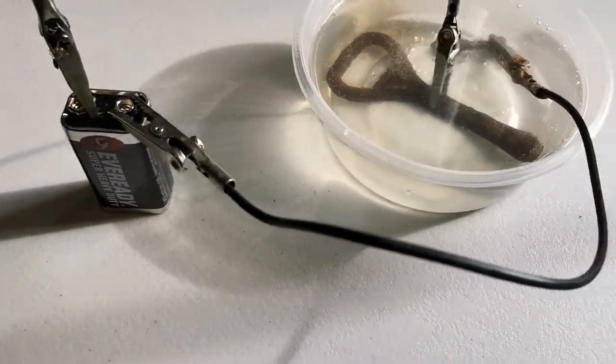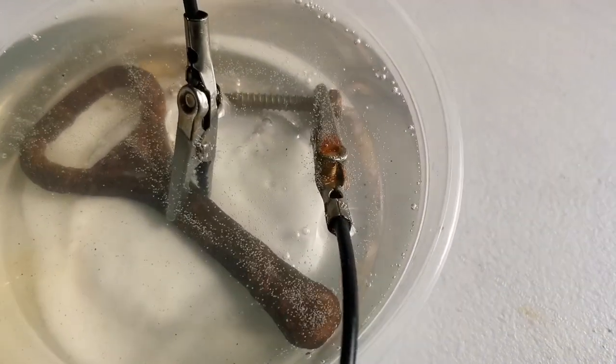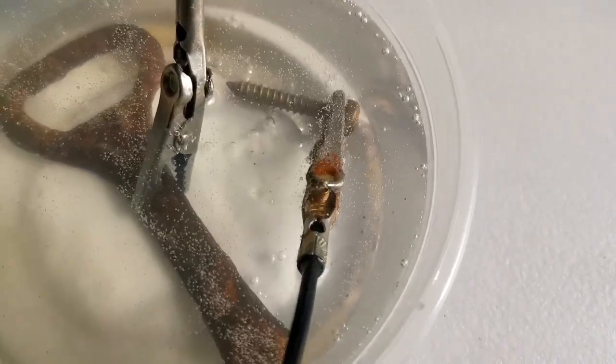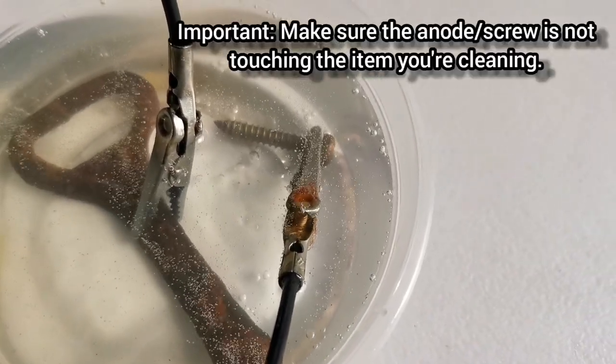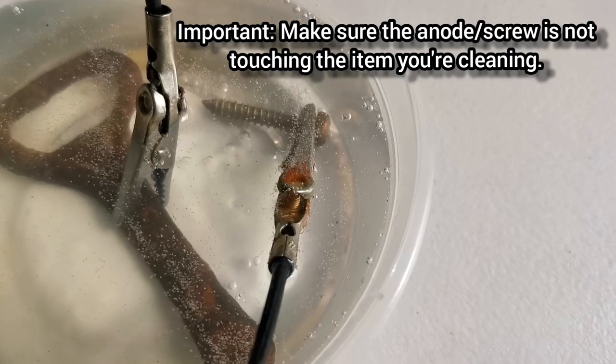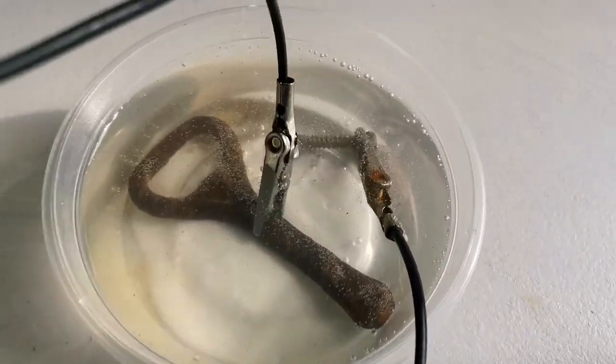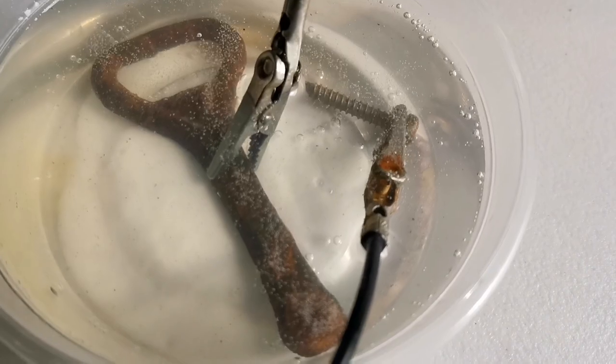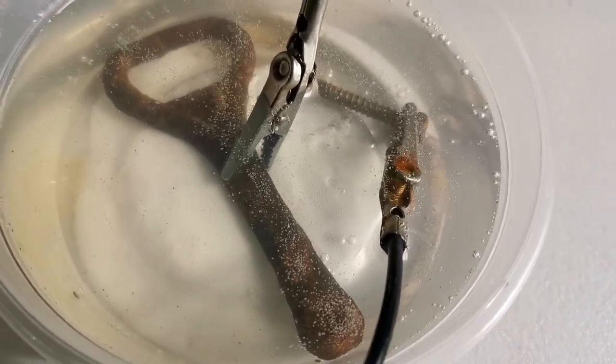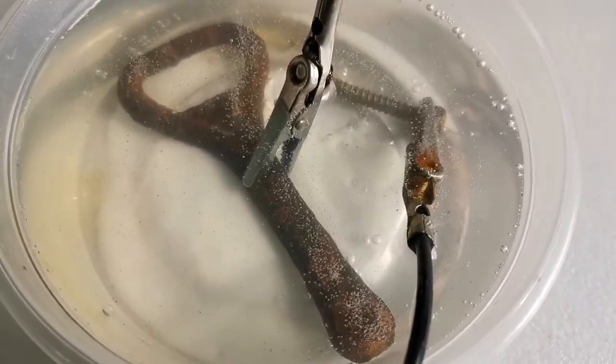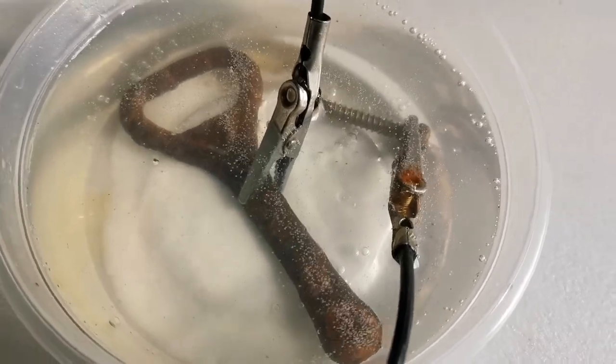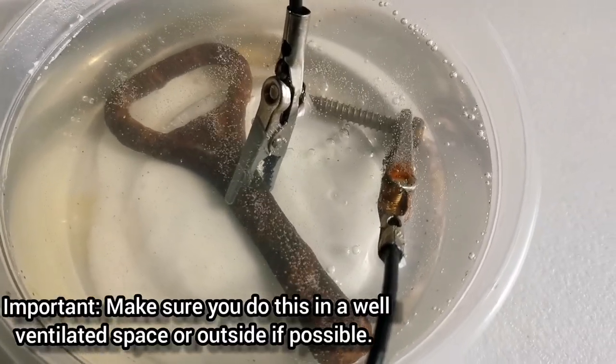And the other lead from the positive terminal on the battery to what's called the anode - that should be either a steel or iron screw or nail. Then the current basically passes through the electrolyte. What you can see bubbling up are hydrogen bubbles, and that's a good sign that the process is actually working and you've got everything hooked up the right way around.